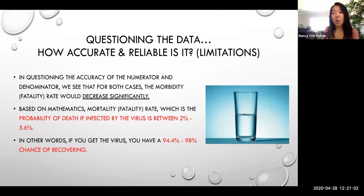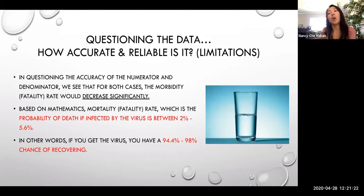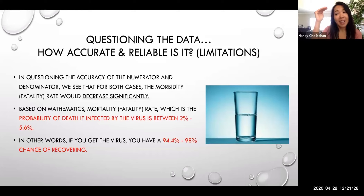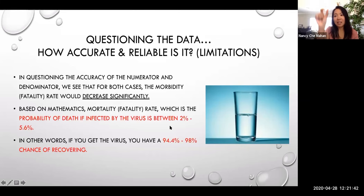So when we question the accuracy and the limitations of data, as all researchers and all people should do, we see that for both cases, the mortality or fatality rates for COVID-19 out of people who get it decrease significantly. When we say 5.6% of people infected in the United States, it's most likely lower — probably down to 2%. So in other words, if you get the virus, you have a 94 to 98% chance of recovering. That's looking at the whole, not just at a sliver.